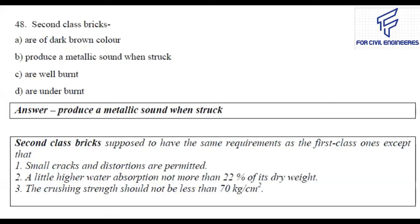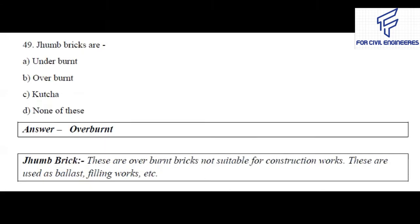Question number 48: Second class bricks are — of dark brown color, produce a metallic sound when struck, are well burnt, or are under burnt? The right answer is produce a metallic sound when struck. Second class bricks are supposed to have the same requirements as first class ones except that small cracks and distortion are permitted, water absorption is not more than 22% of dry weight, and crushing strength should not be less than 70 kg/cm².